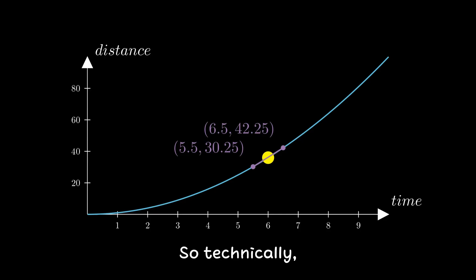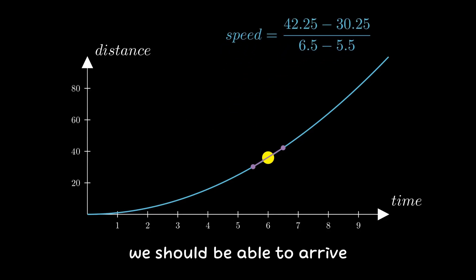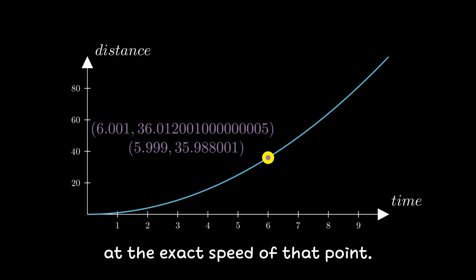So, technically, by making the interval infinitely small, we should be able to arrive at the exact speed of that point.